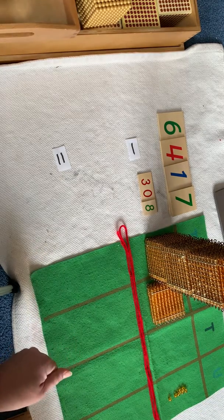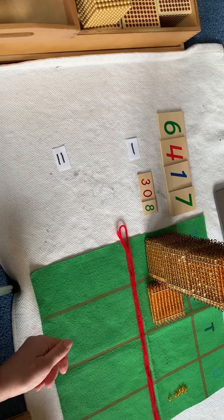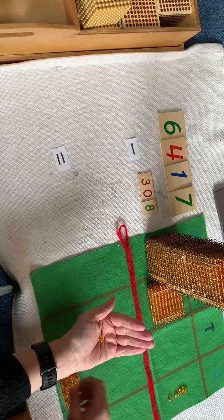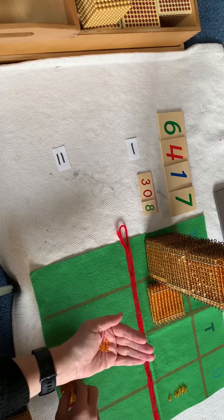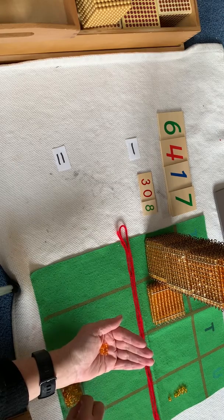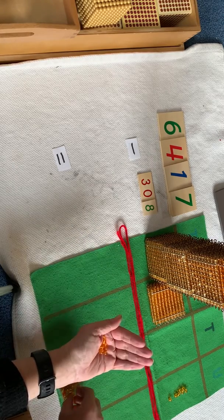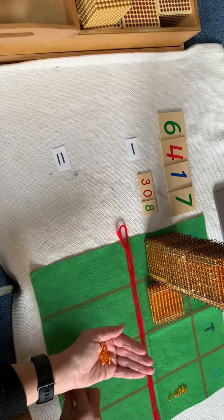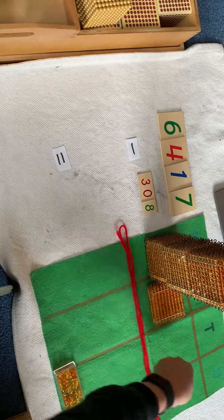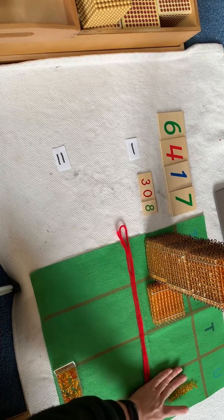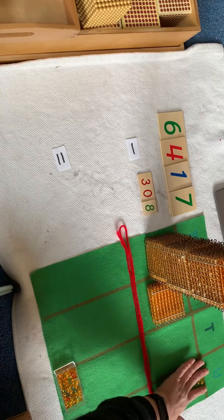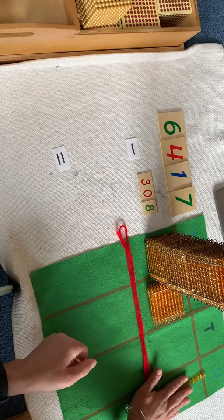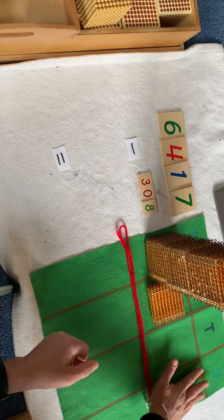So we're going to exchange this ten bar for ten unit beads. One, two, three, four, five, six, seven, eight, nine, ten. Well now, I wonder how many unit beads we have now. Many of you will say 17 because you know ten and seven is 17. But let's prove it.